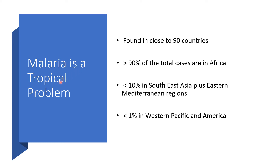Malaria is a tropical problem. Malaria is nearly found in close to 90 countries, but greater than 90% of the total cases will be found in Africa alone. Less than 10% will be found in Southeast Asia with Eastern Mediterranean regions. Only less than 1% will be found in the Western Pacific and America.